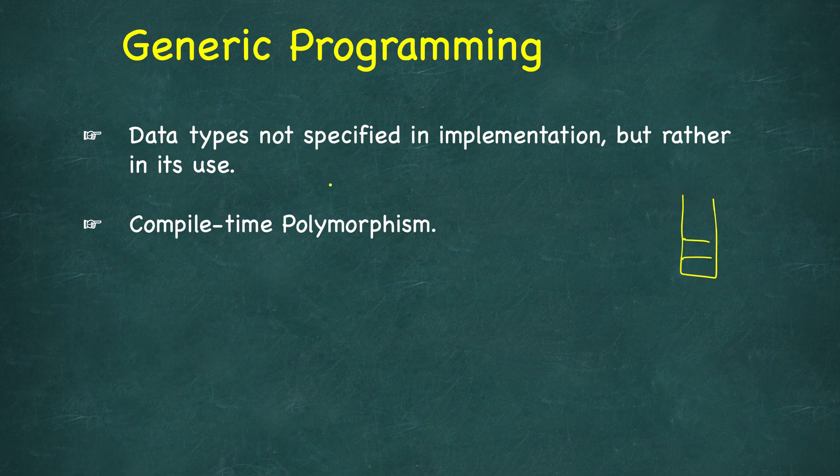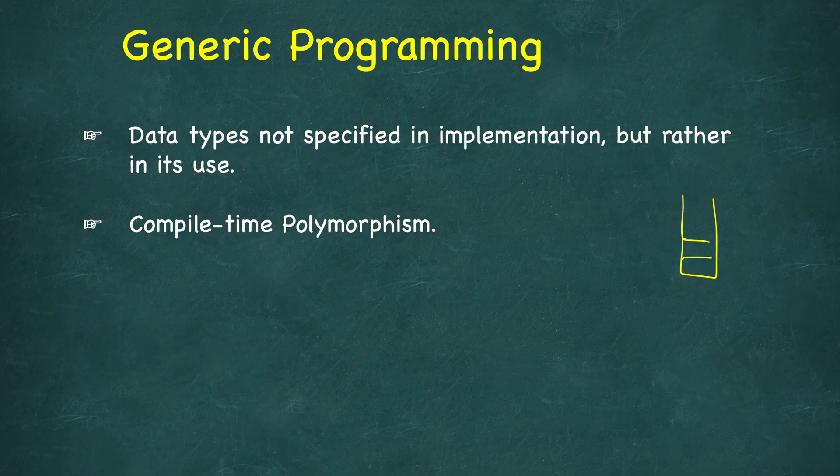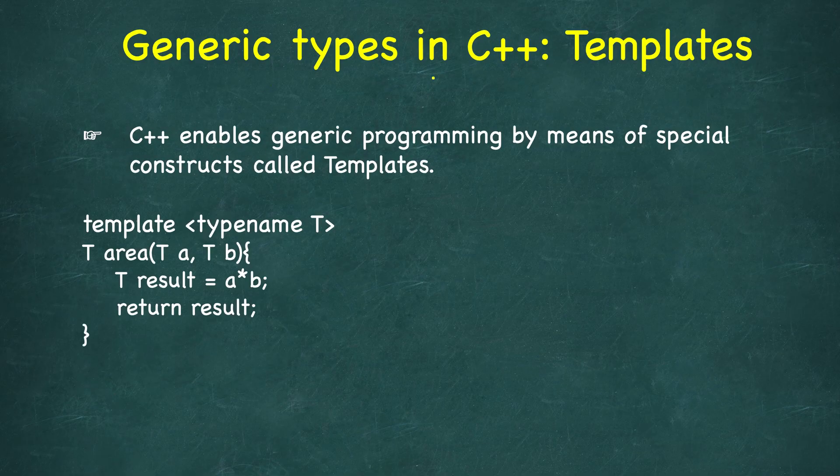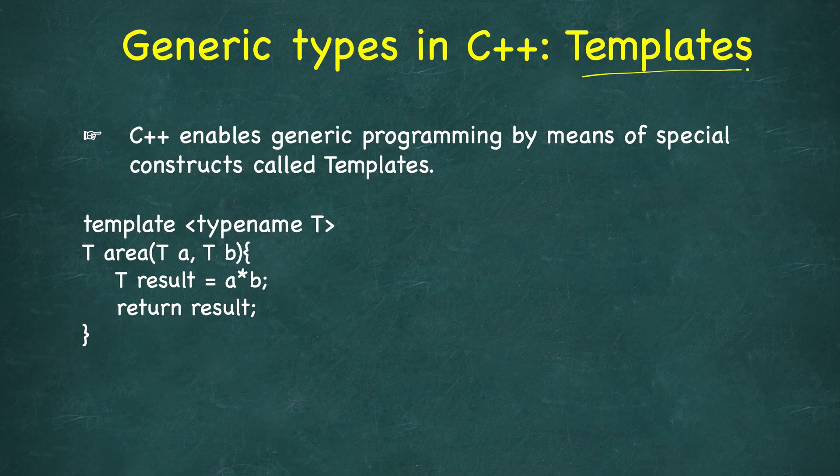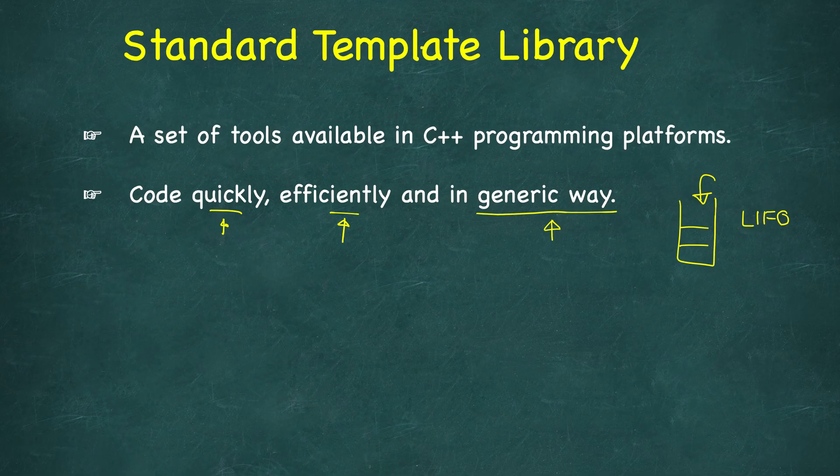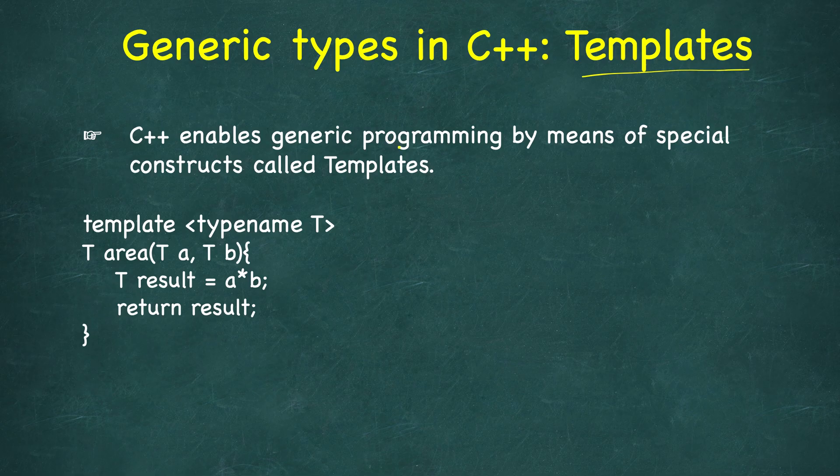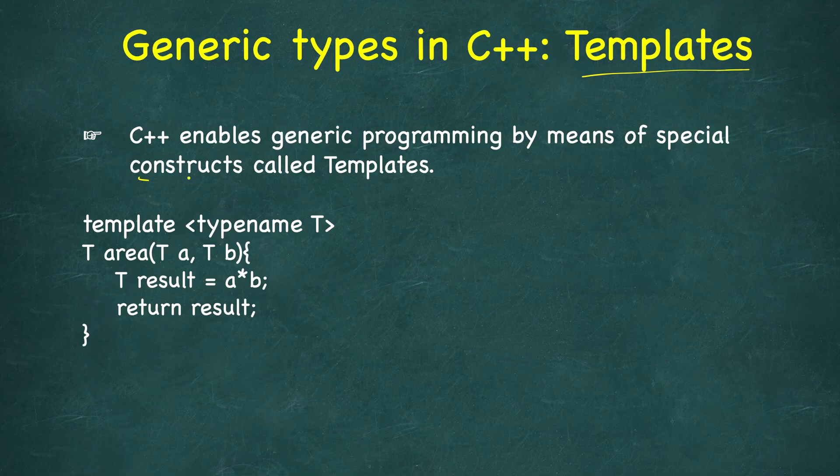So now let's see how C++ achieves this generic programming. In C++ there are generic types which are called templates, and you can see this keyword template which is in the Standard Template Library. Templates provide generic programming in C++ and these are special constructs.